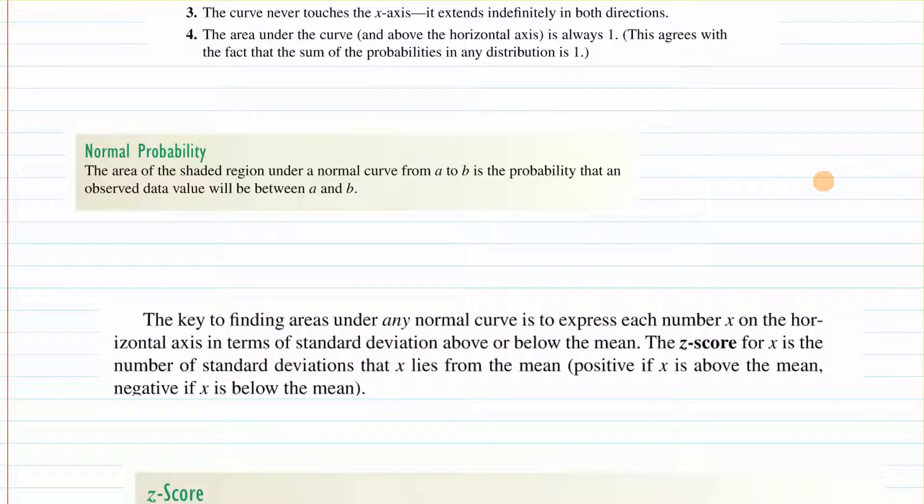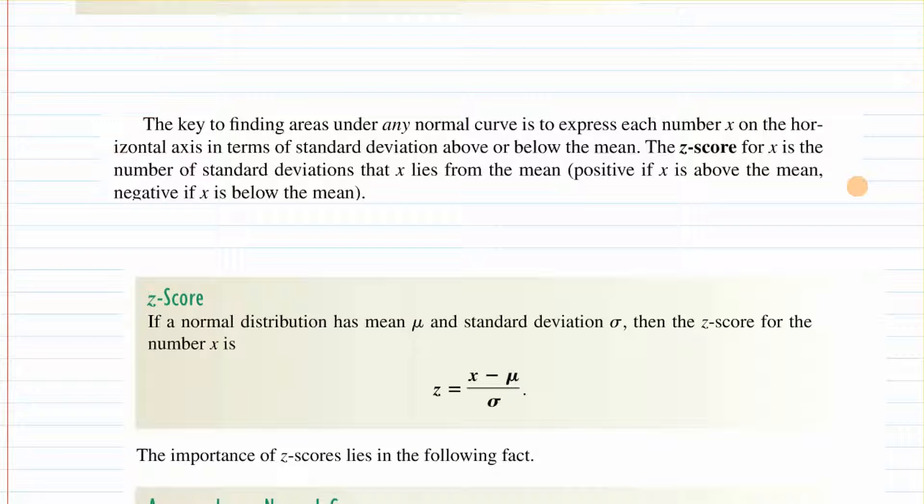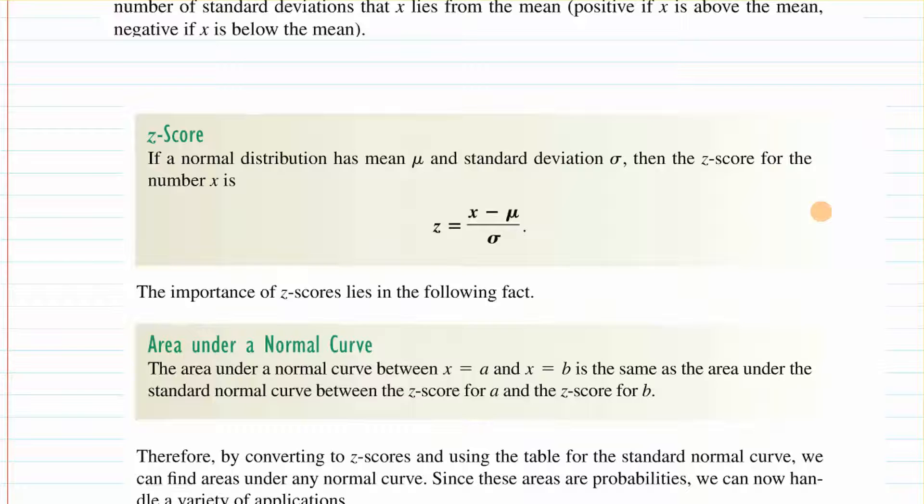The key to finding areas under any normal curve is to express each number x on the horizontal axis in terms of the standard deviation above or below the mean. The z-score for x is the number of standard deviations that x lies from the mean. It's positive if it's above, negative if it's below. Here is the formula for the z-score. If a normal distribution has a mean of mu and a standard deviation sigma, then the z-score is x minus mu over sigma.